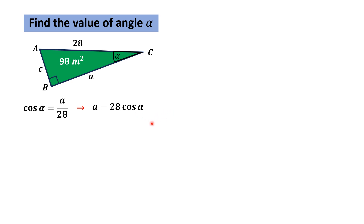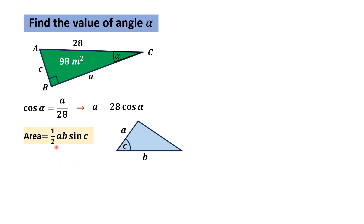Now, we know from trigonometry that if we have a triangle with adjacent sides A and B, and the angle between these two sides is C, then the area of this triangle is equal to half times A times B times sine C. Applying this formula to the given right triangle ABC, the adjacent sides are 28 and a, and the angle between them is alpha.